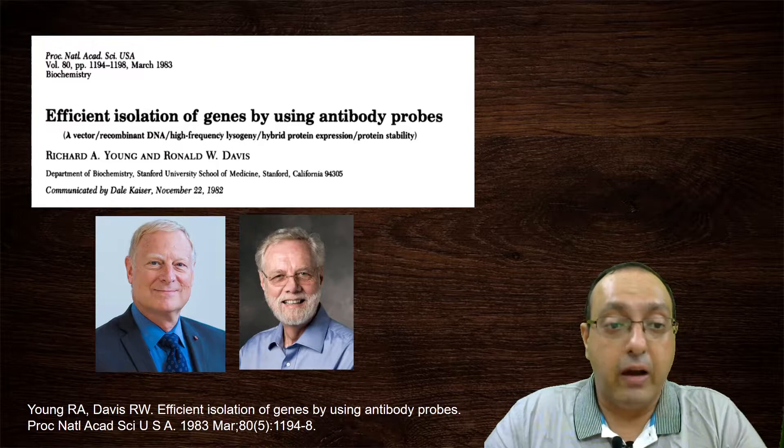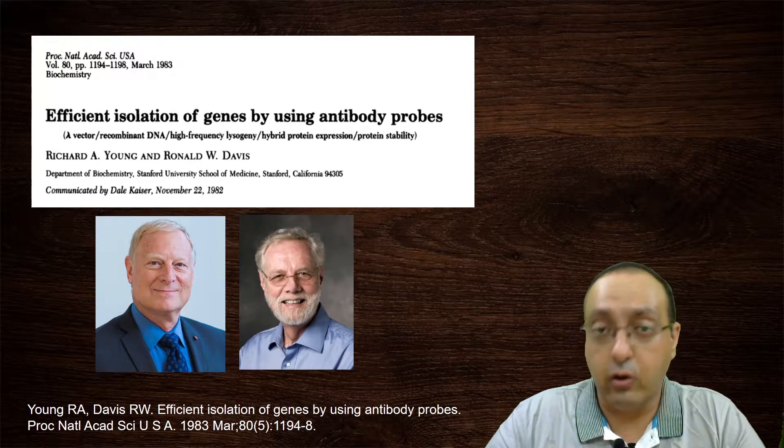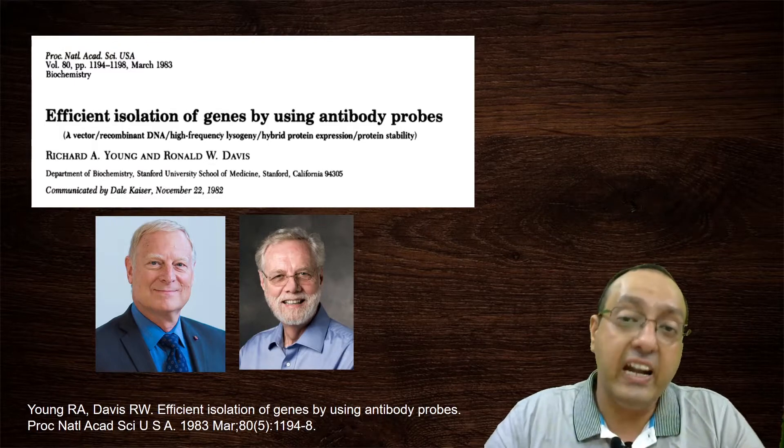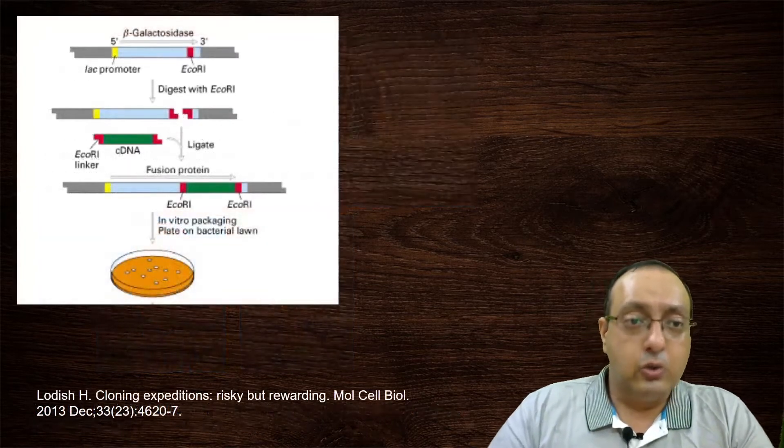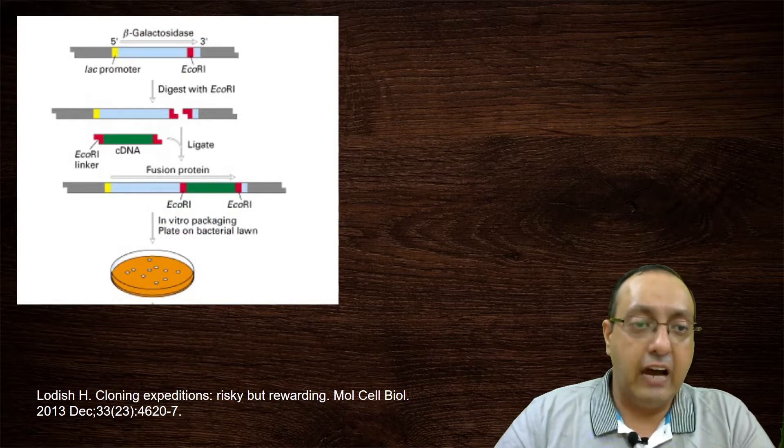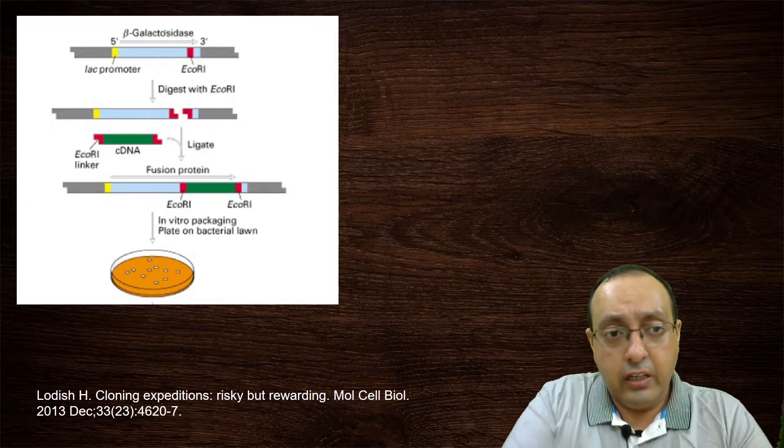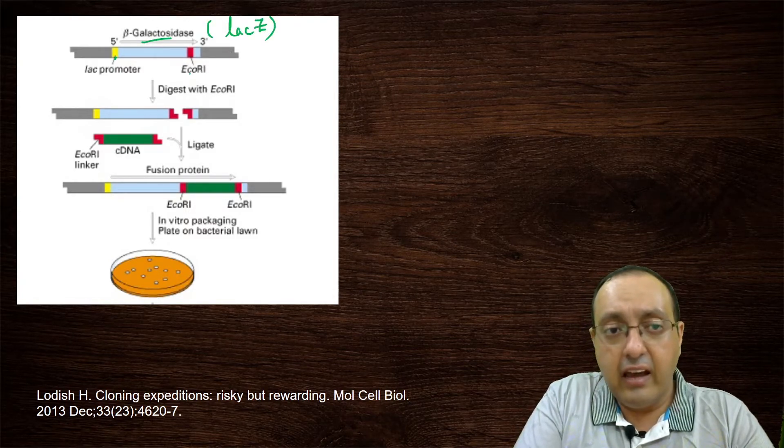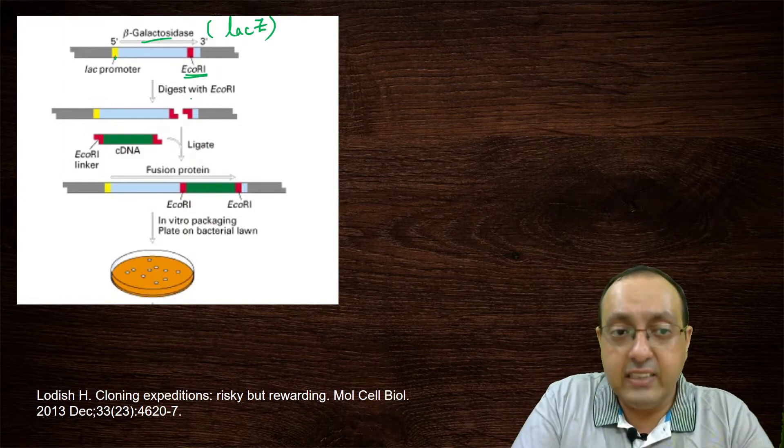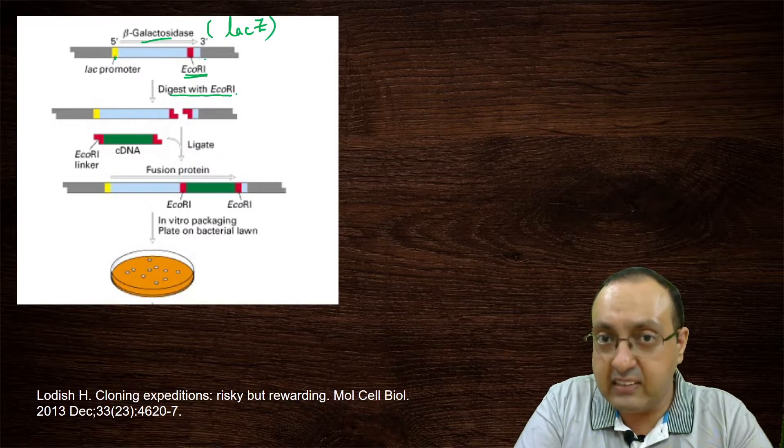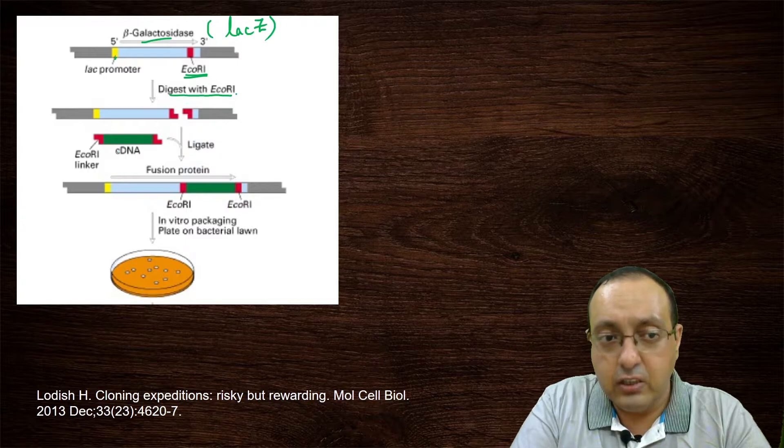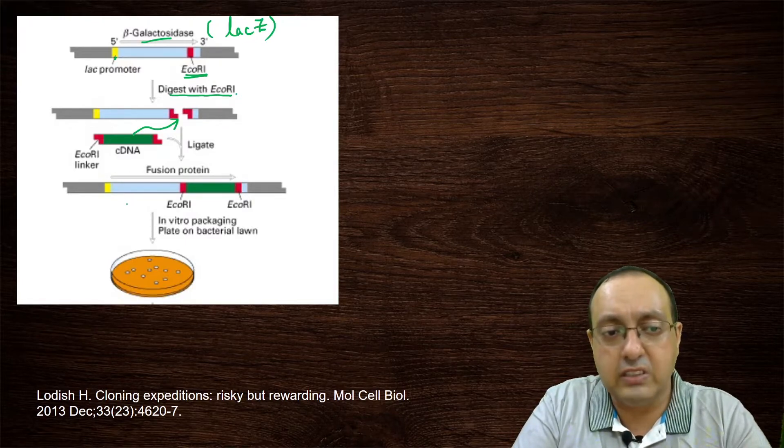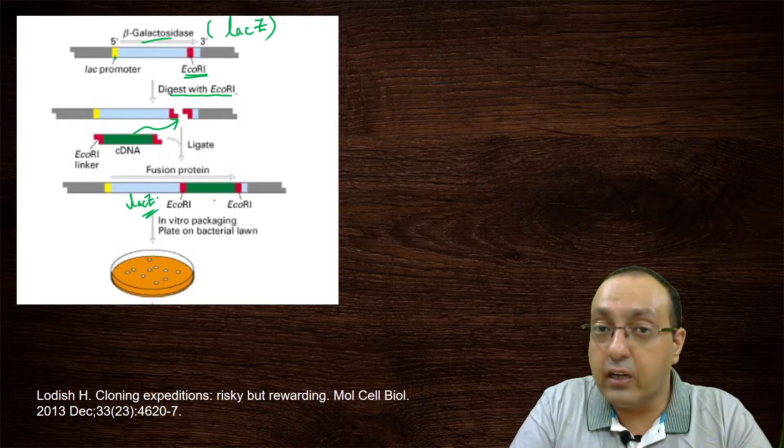Another technique that was developed by Rick Young, then a postdoc in Stanford, now a professor at MIT and one of the established figures in gene expression studies, and Ronald Davis. They used antibody probes for isolation of genes. So in this case, this is the schematic that we have from one of the perspective articles written by Harvey Lodish. Here we have the LAC promoter, beta galactosidase, which is the LAC-Z and an EcoR1 site. You digest with EcoR1. So this will disrupt the LAC-Z open reading frame. LAC-Z will no longer be active. You insert your cDNA in this space. So now the fusion protein is there with some LAC-Z and then your cDNA of interest.